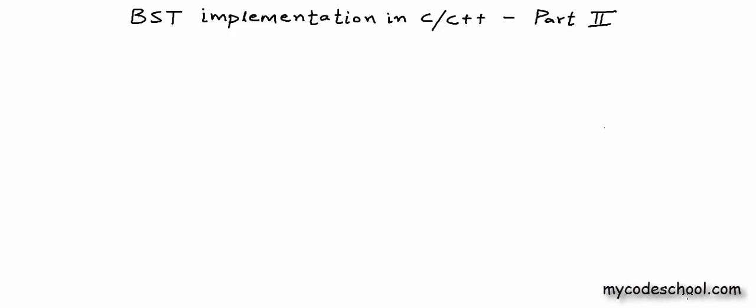In our previous lesson we wrote some code for binary search tree — functions to insert and search data in BST. Now in this lesson we will go a little deeper and try to understand how things move in various sections of application memory when these functions get executed. This will give you some general insight into how memory is managed for execution of a program and how recursion, which is so frequently used in case of trees, works.